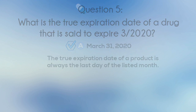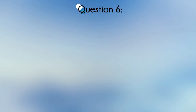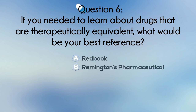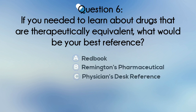Question 6. If you needed to learn about drugs that are therapeutically equivalent, what would be your best reference? A. Red Book. B. Remington's Pharmaceutical. C. Physician's Desk Reference. Or D. The Orange Book.